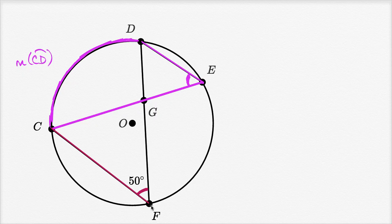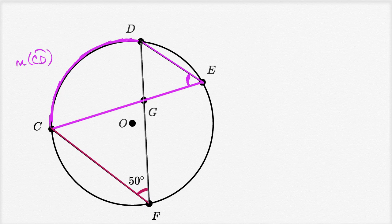you could call this angle CFD. This also intercepts the same arc. So there's two ways you could think about it. Two inscribed angles that intercept the same arc are going to have the same angle measure.